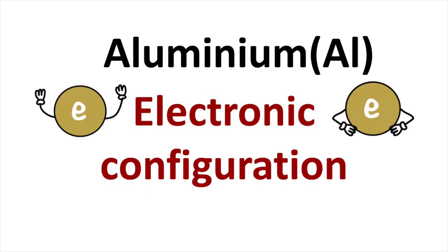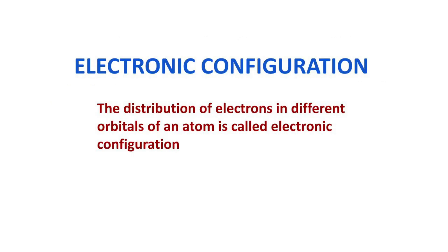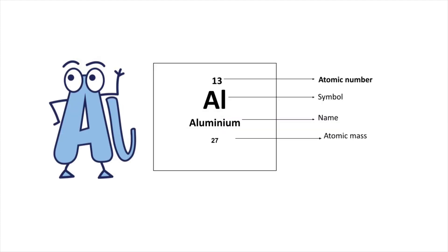Welcome to Aurora Chemistry for Everyone. In this video we are going to analyze writing the electronic configuration of aluminium. The arrangement of electrons in different orbitals of an atom of an element is called electronic configuration. To write electronic configuration we should know that the atomic number of aluminium is 13.